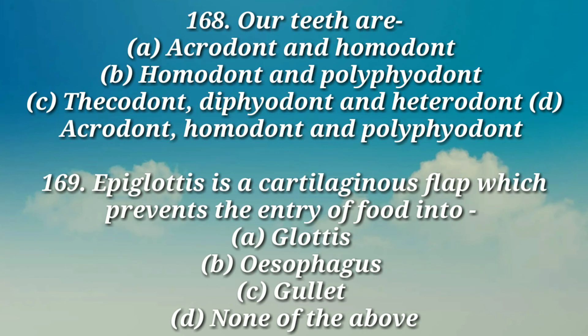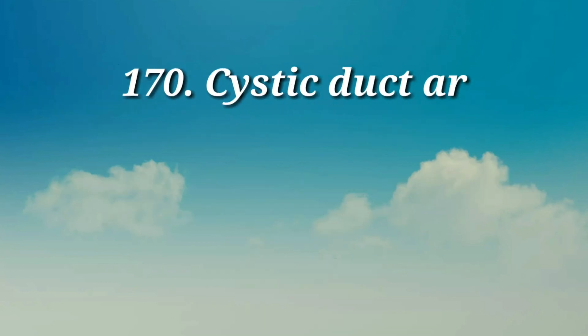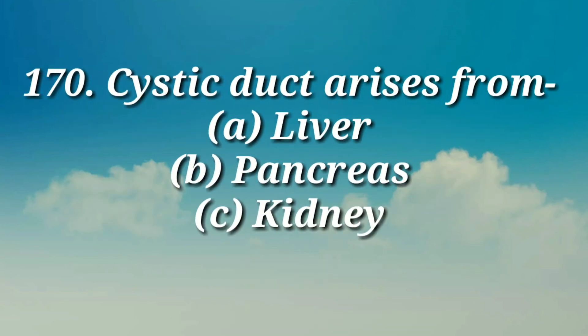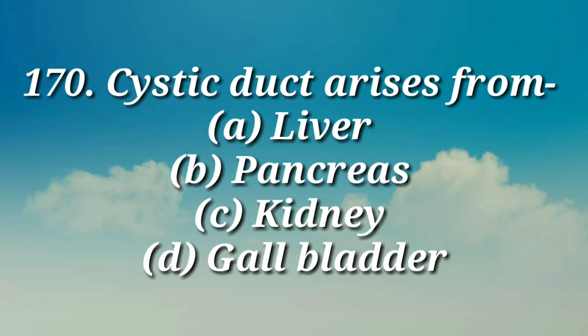Question number 169: Epiglottis is a cartilaginous flap which prevents the entry of food into — a) glottis, b) esophagus, c) gullet, d) none of the above. Question number 170: Cystic duct arises from — a) liver, b) pancreas, c) kidney, d) gallbladder.